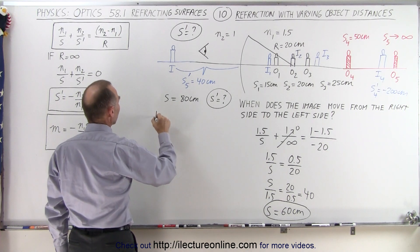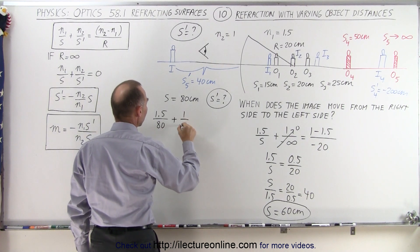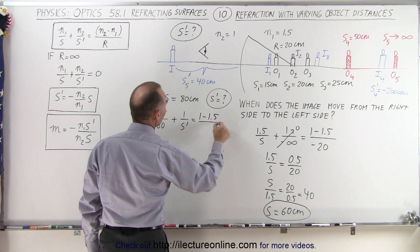N1, 1.5 divided by 80 now, plus 1 over S' is equal to 1 minus 1.5 over minus 20.